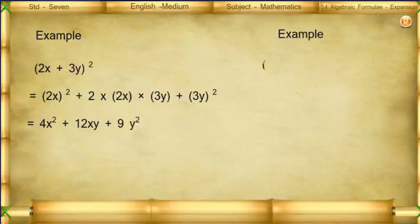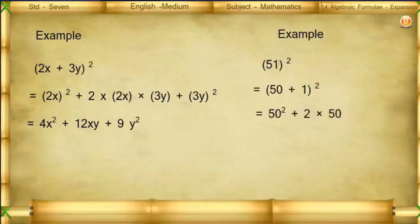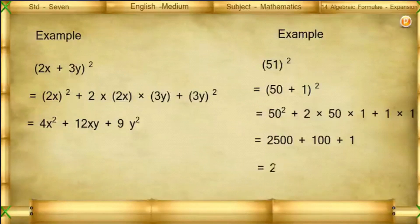Example: 51² = (50 + 1)² = 50² + 2·50·1 + 1² = 2500 + 100 + 1 = 2601.